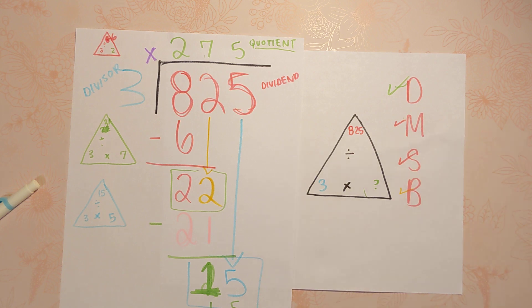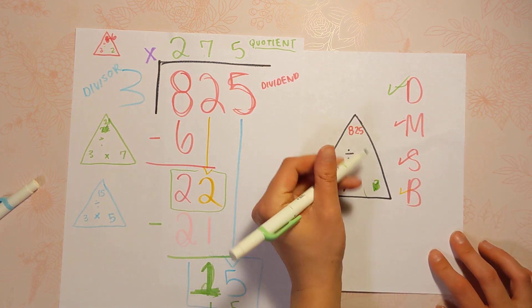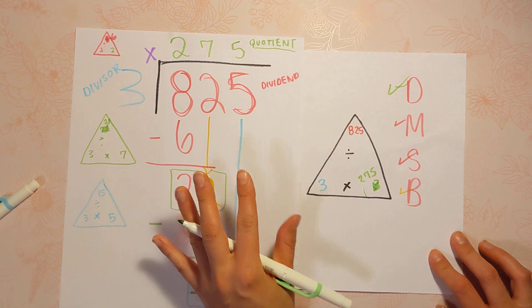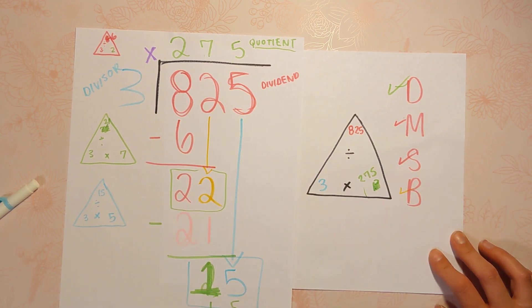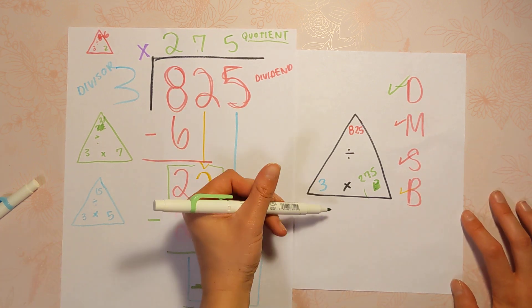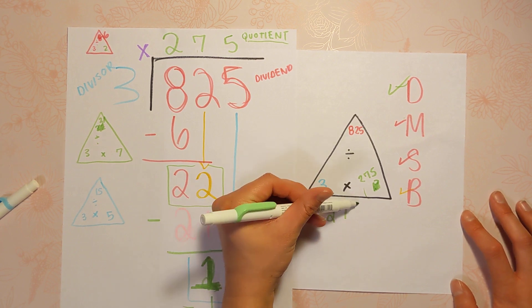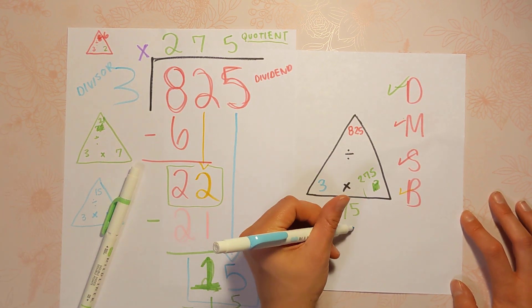Now stick around because I do need you to check it, especially if this is new to you. If you said that 825 divided by 3 was 275, you are also claiming that 3 times 275 is 825. So it's actually super easy to prove it. And I want you to check your work and prove it. This is how you do that.